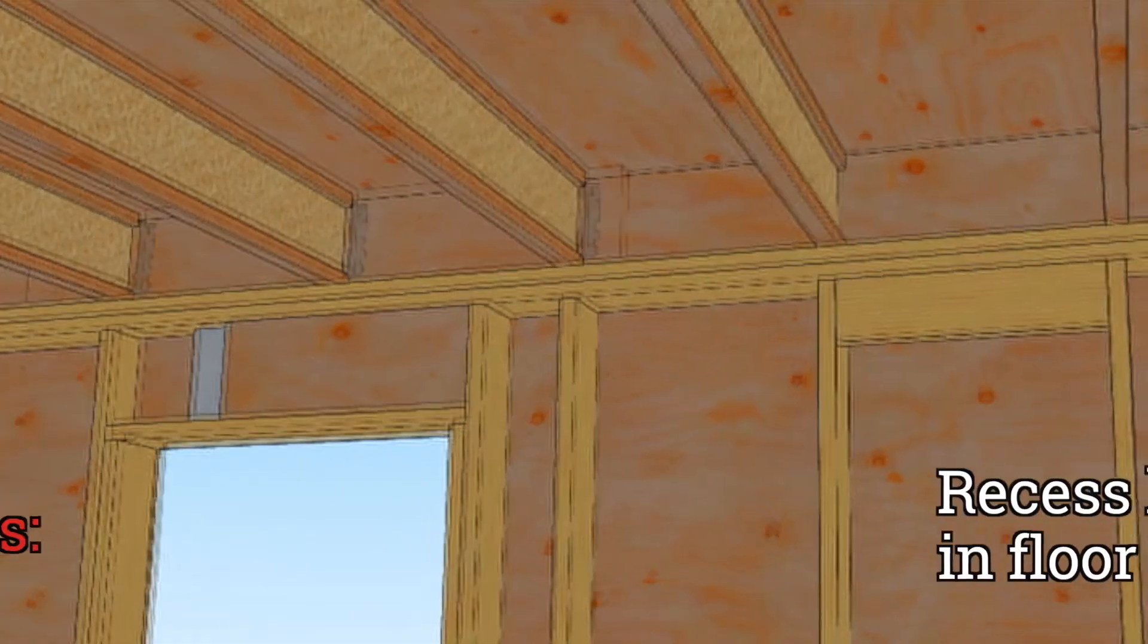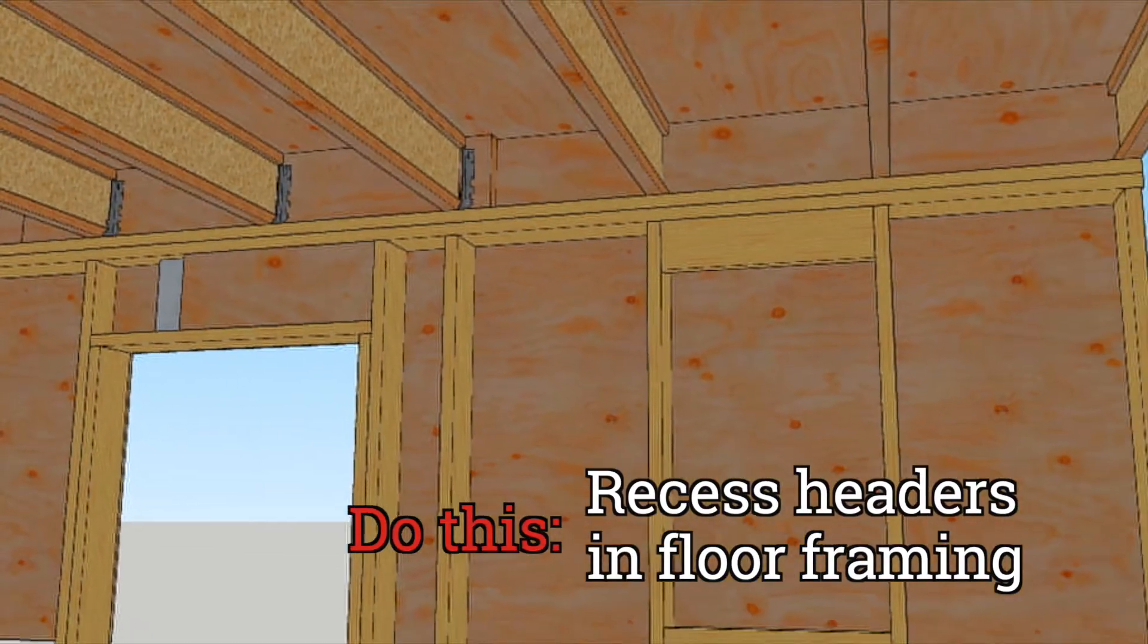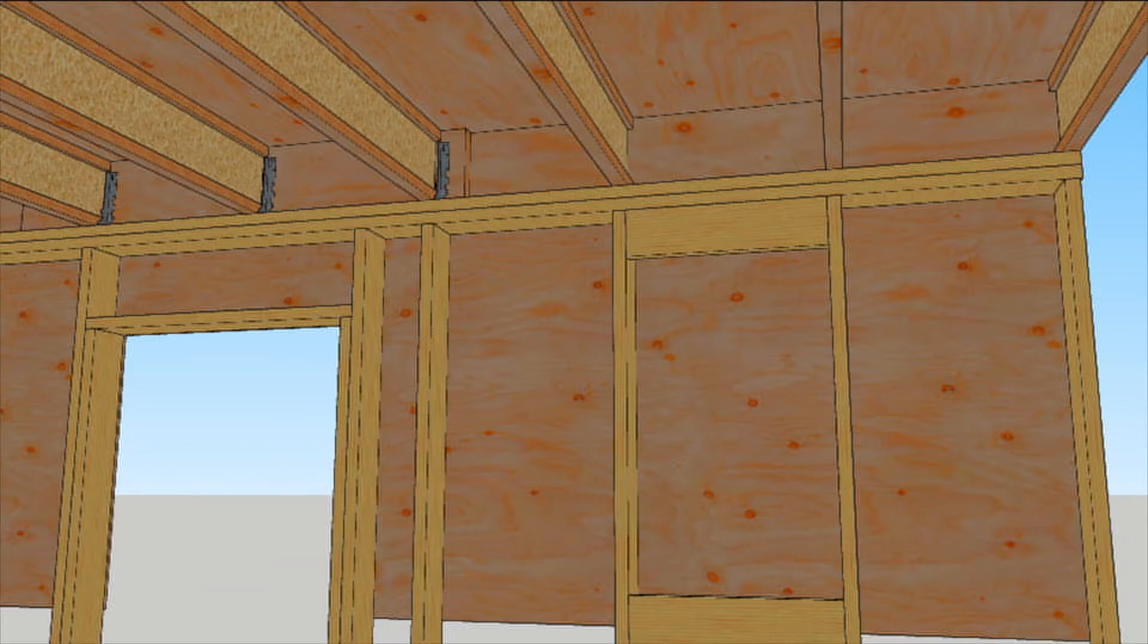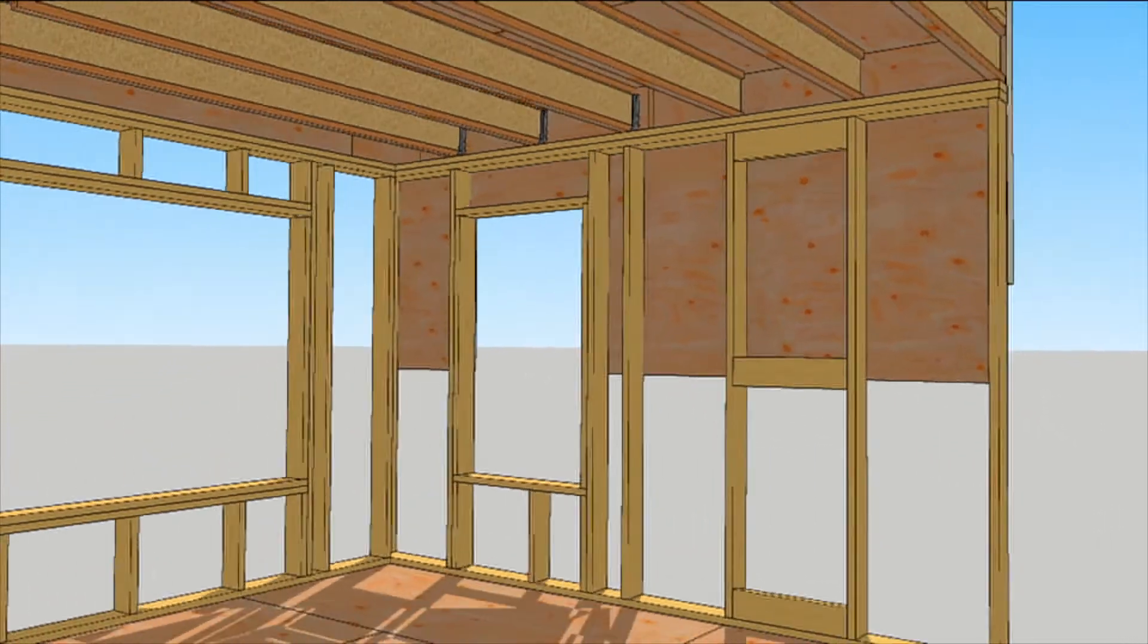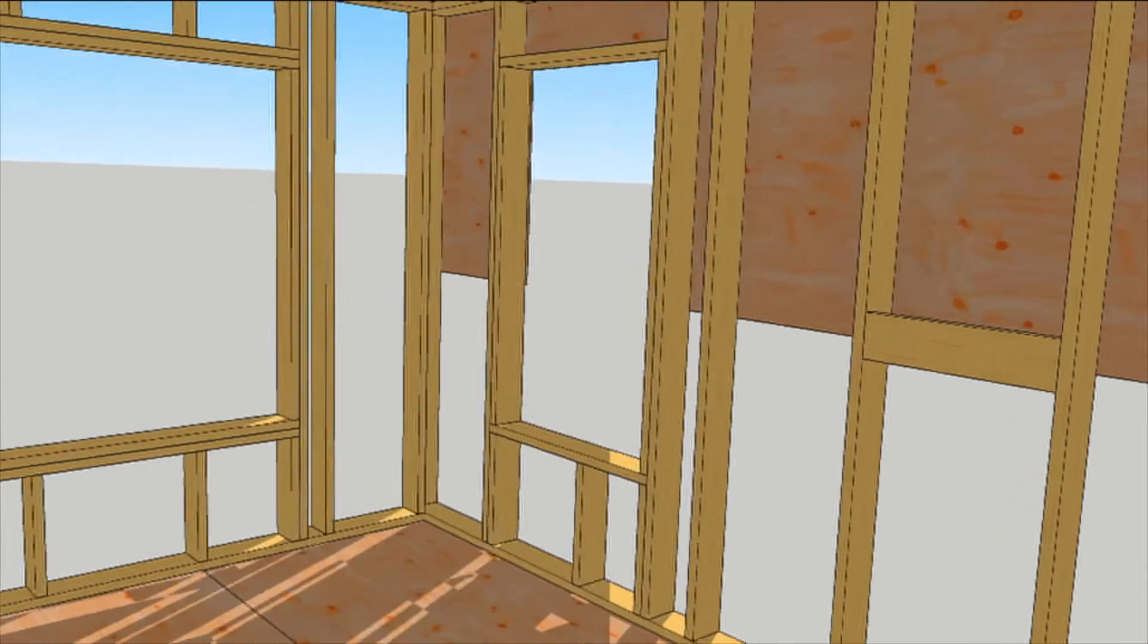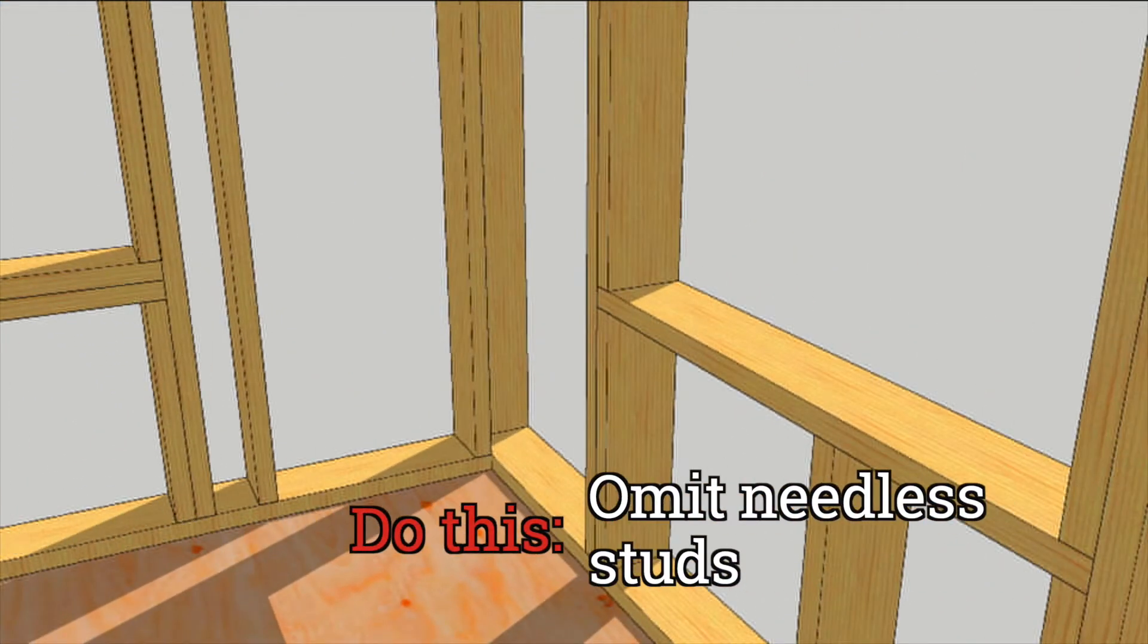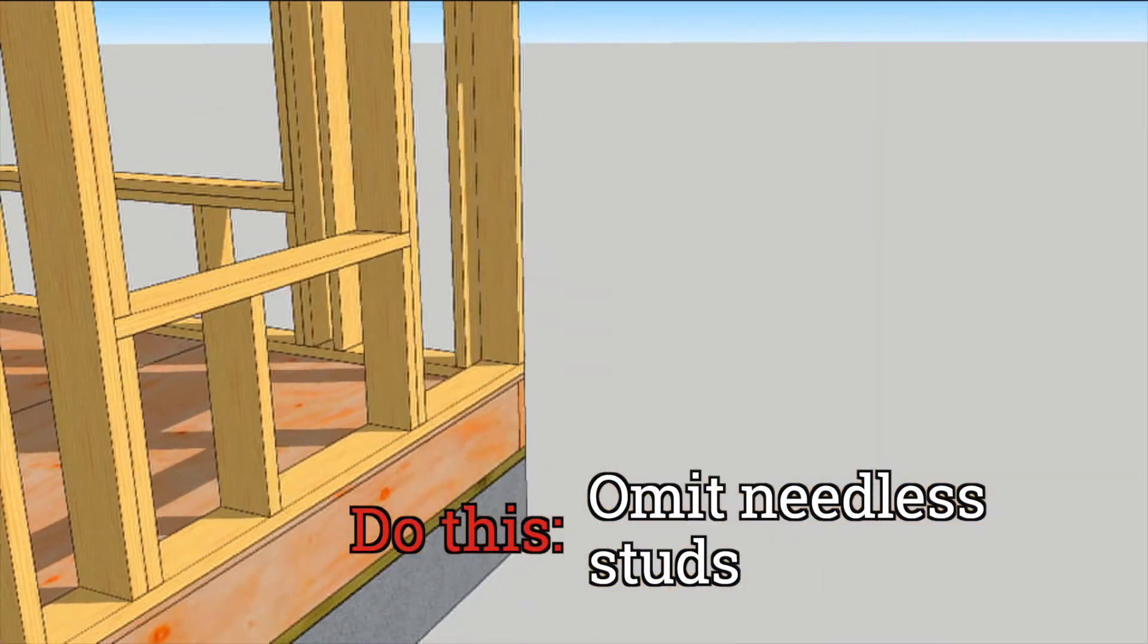You can also recess an extra ply of rim board into the floor above openings to eliminate headers from walls altogether. As long as you're omitting things, specify two stud corners and as few studs as practical around windows, doors, and wall intersections.